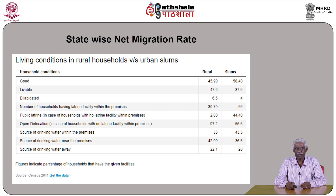Similarly, data on the number of households having toilet facilities within premises, access to public toilets, the proportion opting for open defecation, and sources of drinking water — whether within the premises, near the premises, or away from premises — when compared between rural households and urban slums, very clearly indicate that rural households have a lower quality of life on these indicators compared to urban slums.